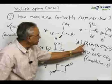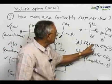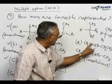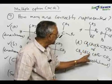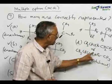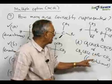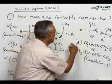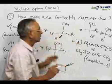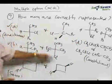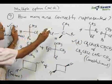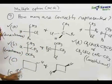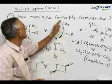Now come to choice D, where CH3, Cl, Br, CH2, CH3 has chlorine and bromine attached to the same carbon atom, whereas in the other structure chlorine is attached to the second carbon atom and bromine is attached to the next carbon atom. Therefore they are not stereoisomers — they are constitutional isomers, and that is also correctly stated. In other words, all four pairs are correctly represented as enantiomers, enantiomers, two representations of the same compound, and constitutional isomers. Therefore all four are correct.